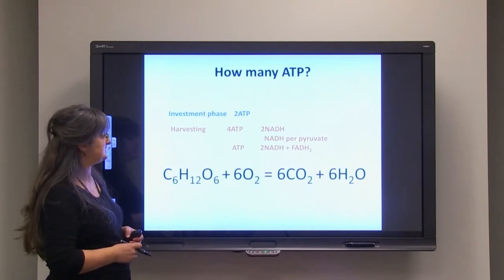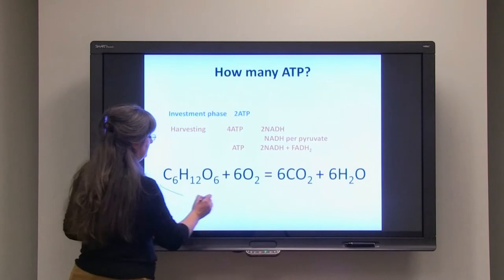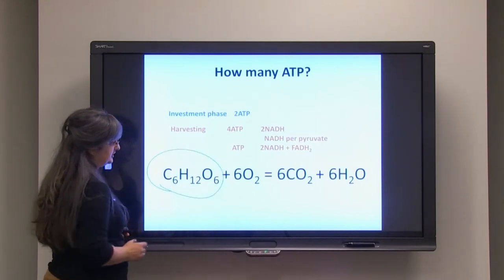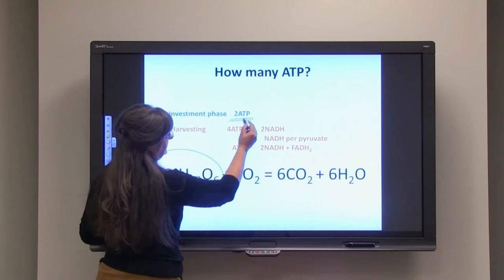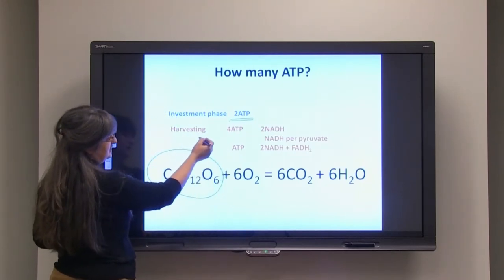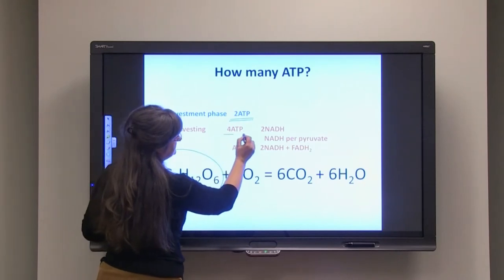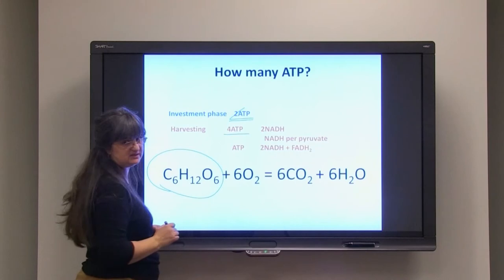So how many ATPs are overall released from one glucose molecule? We have first investment phase. So four ATPs are released during glycolysis. So we harvested four ATP but we gave away two ATPs.